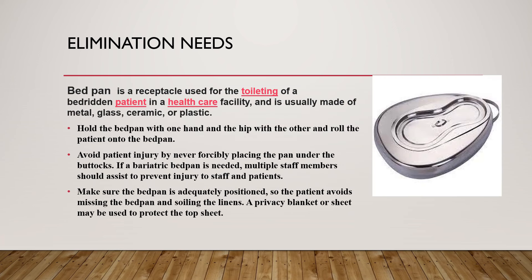The bedpan is a receptacle used for the toileting of a bedridden patient in a healthcare facility, and it is usually made of metal, glass, ceramic, or plastic. To use the bedpan, hold it with one hand and the hip with the other and roll the patient onto the bedpan. Never forcibly place the pan under the buttocks. If a bariatric bedpan is needed, multiple staff members should assist. Make sure the bedpan is adequately positioned so the patient avoids missing it and soiling the linens. A privacy blanket or sheet may be used to protect the top sheet.